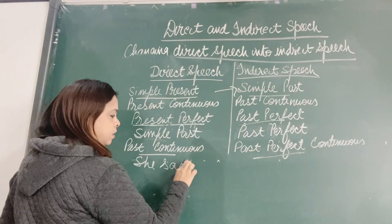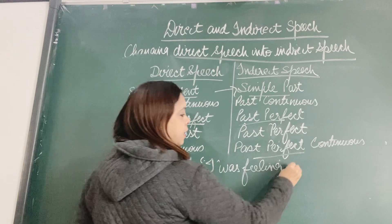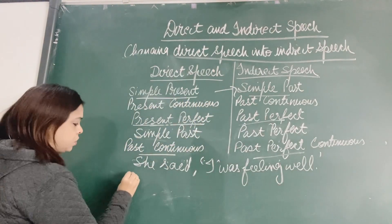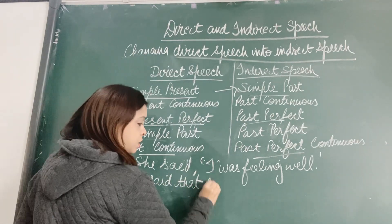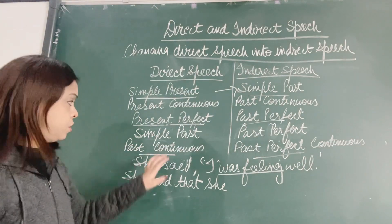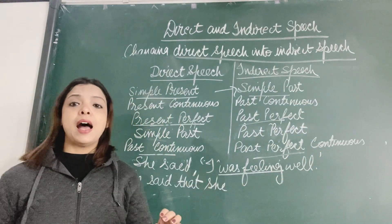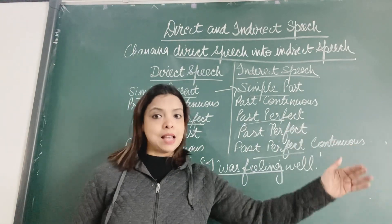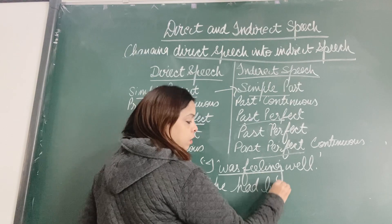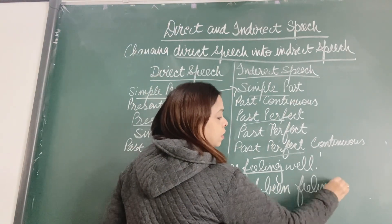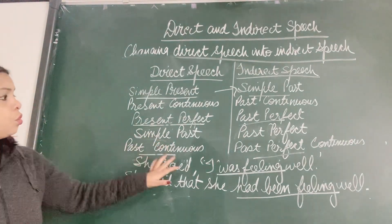One more: past continuous changes to past perfect continuous. For example: She said, 'I was feeling well.' In indirect speech: she said that — 'I' becomes 'she' — 'was feeling' is past continuous. Past continuous changes to past perfect continuous — we add 'had been' plus verb plus '-ing.' So it becomes: she had been feeling well. This is how past continuous changes to past perfect continuous.